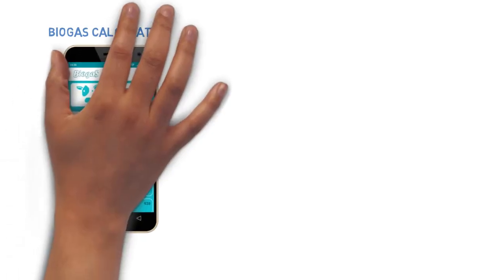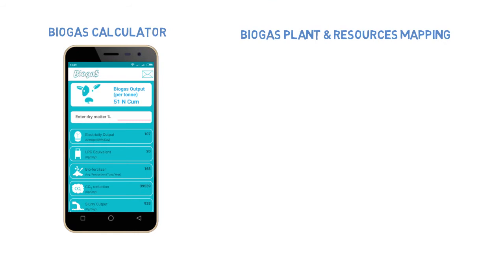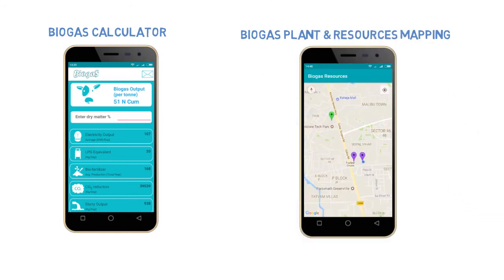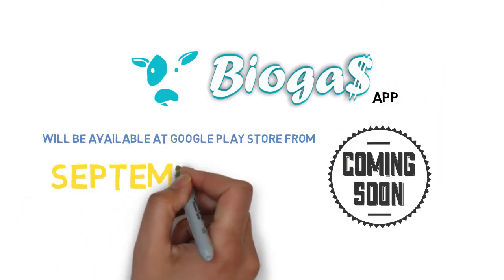Now calculate all technical data using the biogas calculator and learn about nearby waste recyclers, waste generators, and resources using mapping. The Biogas App will be available on Google Play Store from September 2017.